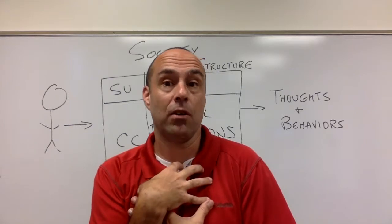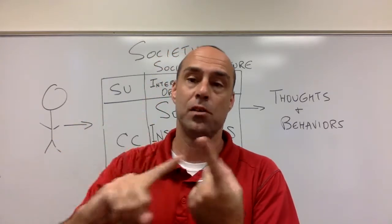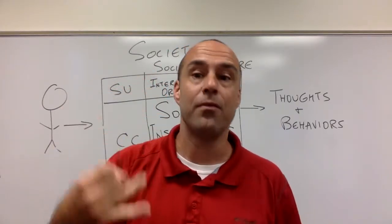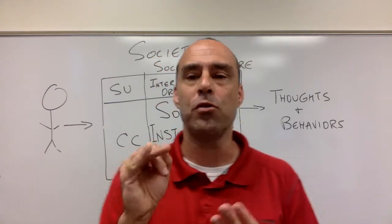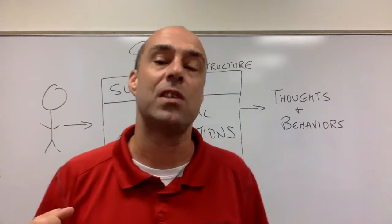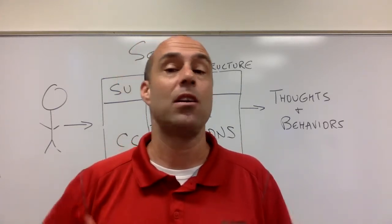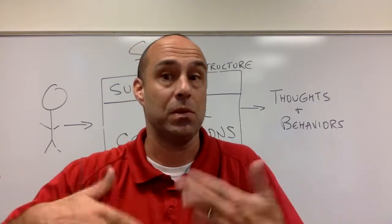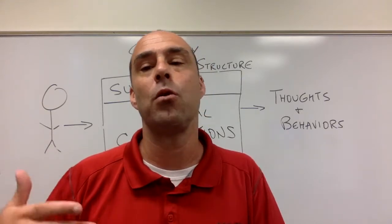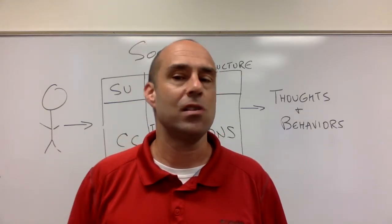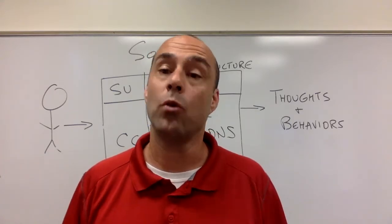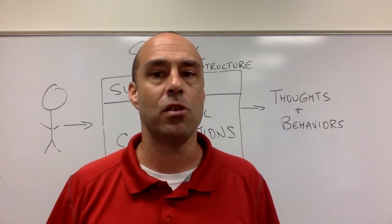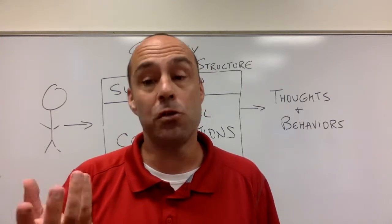All of the statuses that I inhabit throughout my life are what's called my status set, which is attached to a particular individual. My status set includes husband, father, brother, son, coach, professor, driver, and more. Most of those are achieved statuses — things I had to go through an initiation rite to get into. I had to get a master's degree to be able to teach, that was my initiation rite. But there are also ascribed statuses: my white skin, my maleness are things I didn't have to go through an initiation rite for — I just got those.